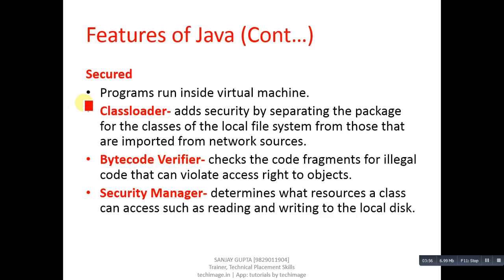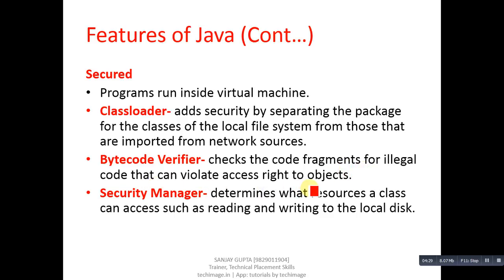Next is secure. Java is secure because programs run inside the Java Virtual Machine (JVM), which will be discussed in later tutorials. The JVM has three security features: the class loader, which adds security by separating the packages from the local file system from those imported from network sources; the bytecode verifier, which checks code fragments for illegal code that can violate access rights to objects; and the security manager, which determines what resources a class can access, such as reading and writing to the local disk.